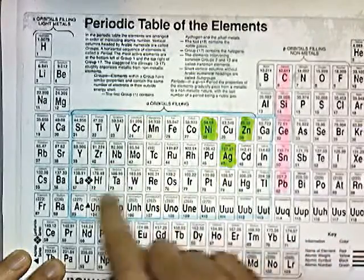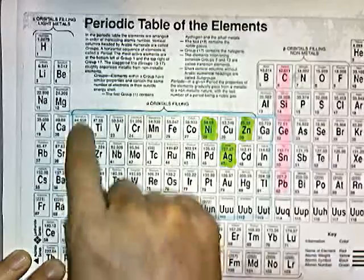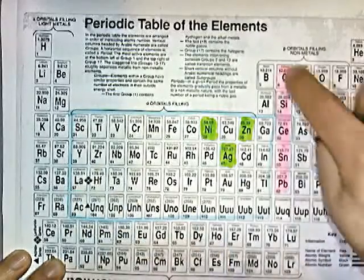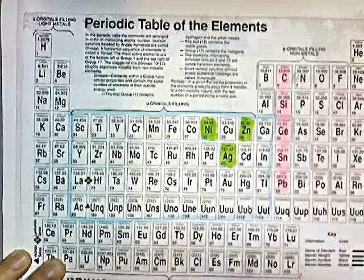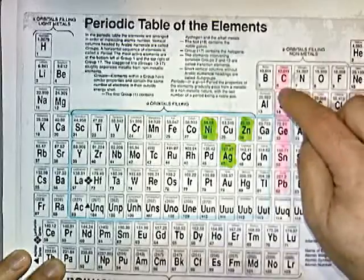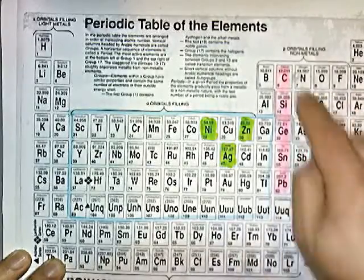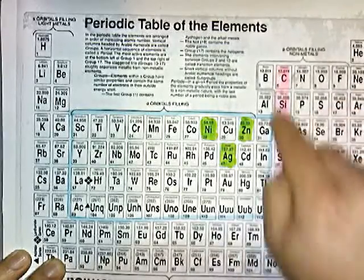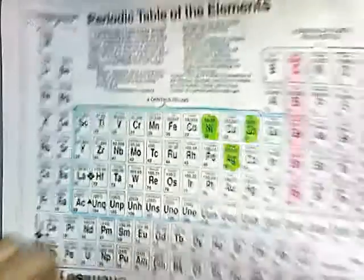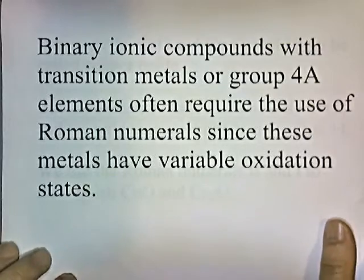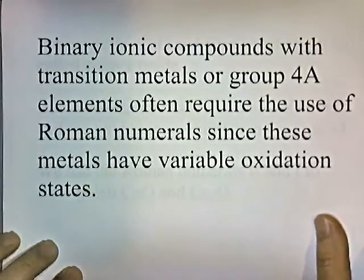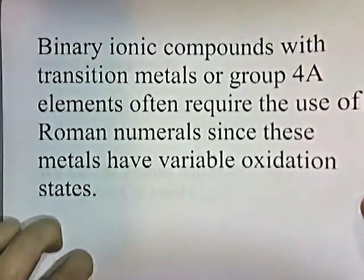Most transition metals tend to vary in oxidation state. Group 4 elements also tend to have variable oxidation states — carbon can be plus two or plus four. So binary ionic compounds with transition metals or group 4 elements often require Roman numerals.